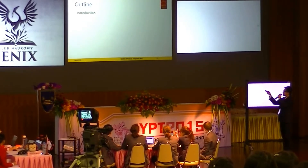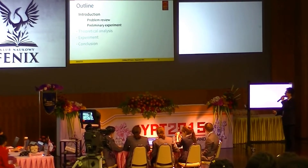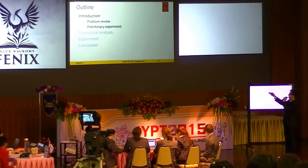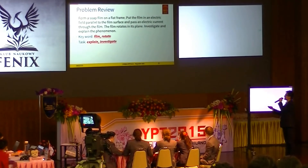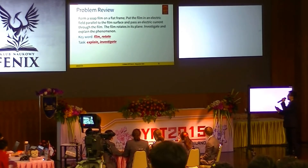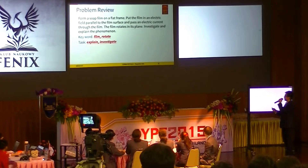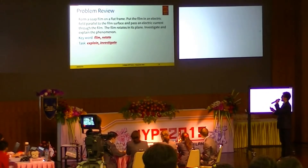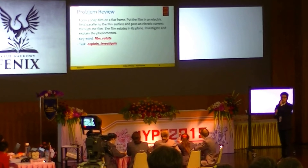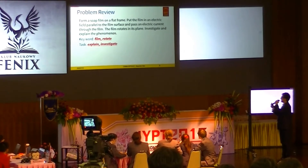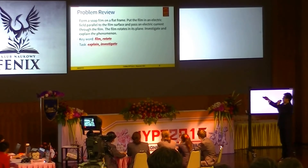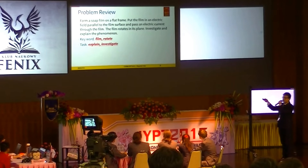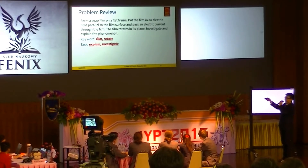In the introduction, I will first review the problem and the preliminary experiments. The problem: form a soap film on a flat frame, put the film in an electric field parallel to the film's surface, and pass electric current through the film. The film rotates — investigate and explain the phenomena. The key words are film and rotate, and the task is to explain and investigate.